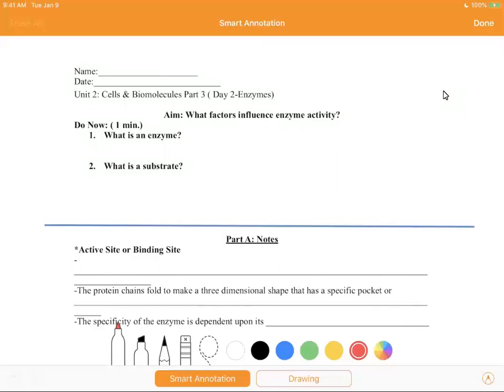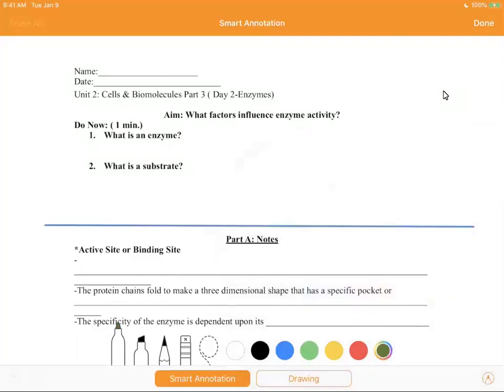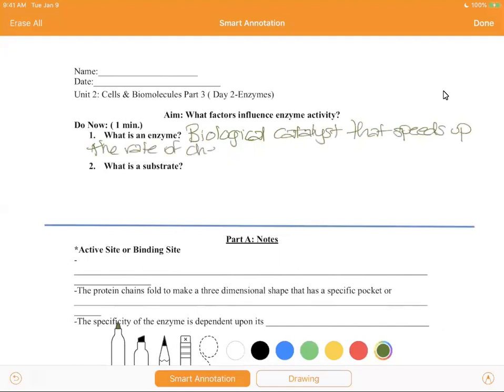Today we're going to actually talk about factors that influence enzymatic activity. So our do now says, what is an enzyme? Well, full definition like we spoke about yesterday: biological catalyst that speeds up the rate of chemical reactions.